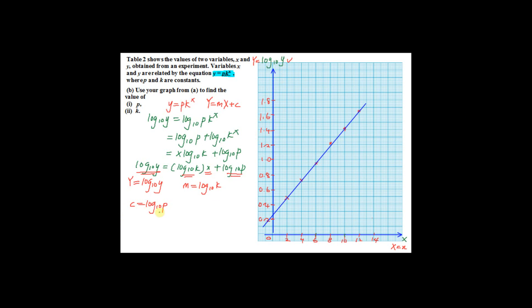So you can see here, to find the value of p, I have to obtain the value of c from the graph. That is the intercept here, the vertical intercept. So this is equal to 0.26. So you know your c is 0.26. Therefore, log 10 p equals 0.26. p equals shift log of 0.26, which is 10 to the power 0.26. This will give you an answer 1.82.